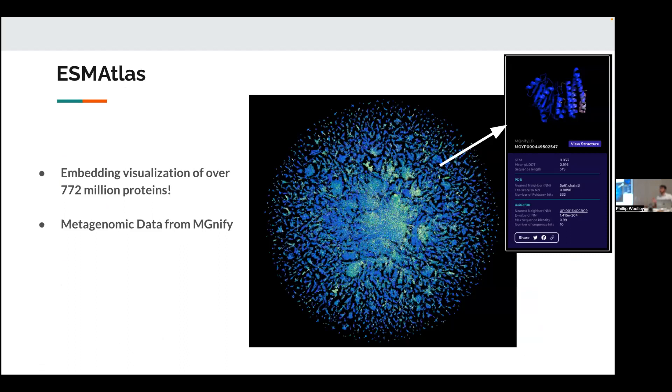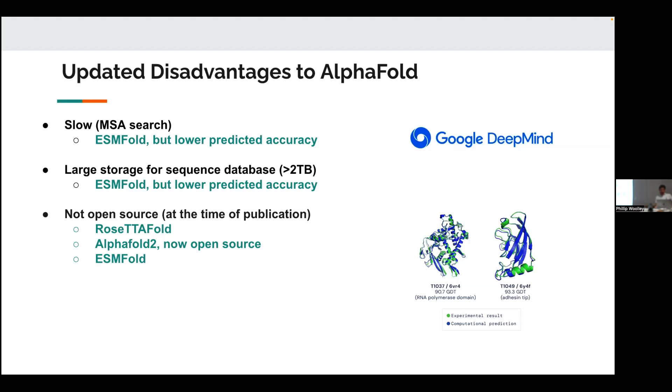However, given that it's so much faster than actually running AlphaFold2. So they went ahead and ran basically every known sequence in the entire proteome through ESM, creating the ESM Atlas, which was super cool when it came out, over 700 million proteins. By comparison to this day, the AlphaFold2 database, I think only has 200 million proteins. So if quantity is what you're looking for, then ESM is the way to go and super cool. So updated disadvantages to AlphaFold. ESM, much faster but lower accuracy. Same thing with the storage database. And it's open source, which is cool.